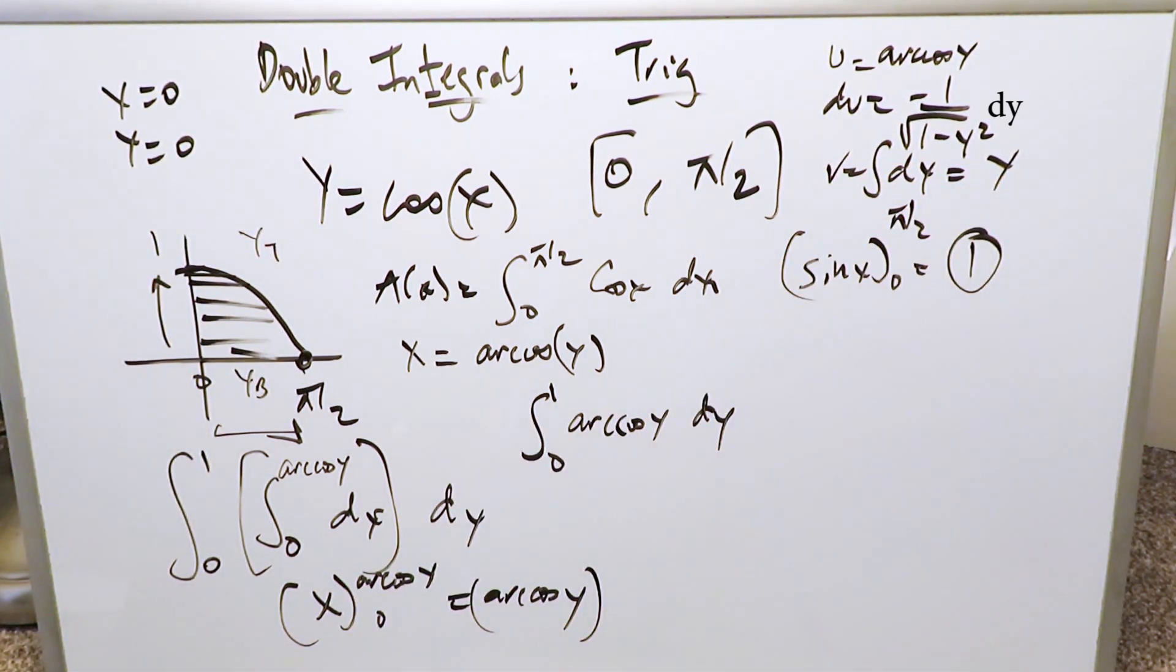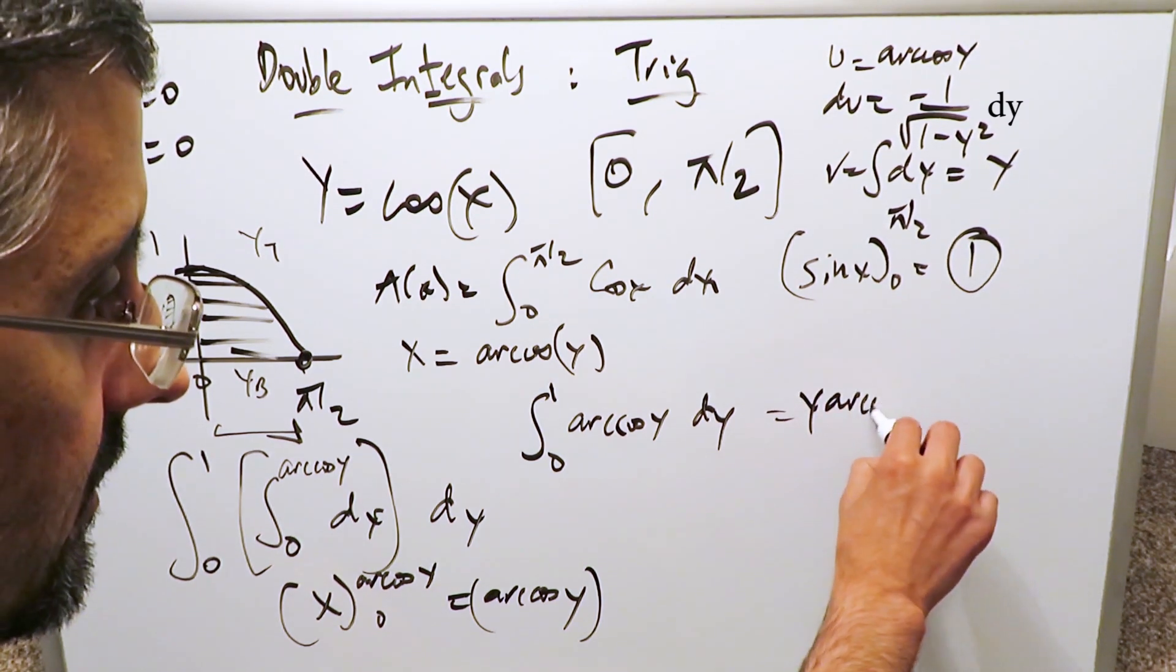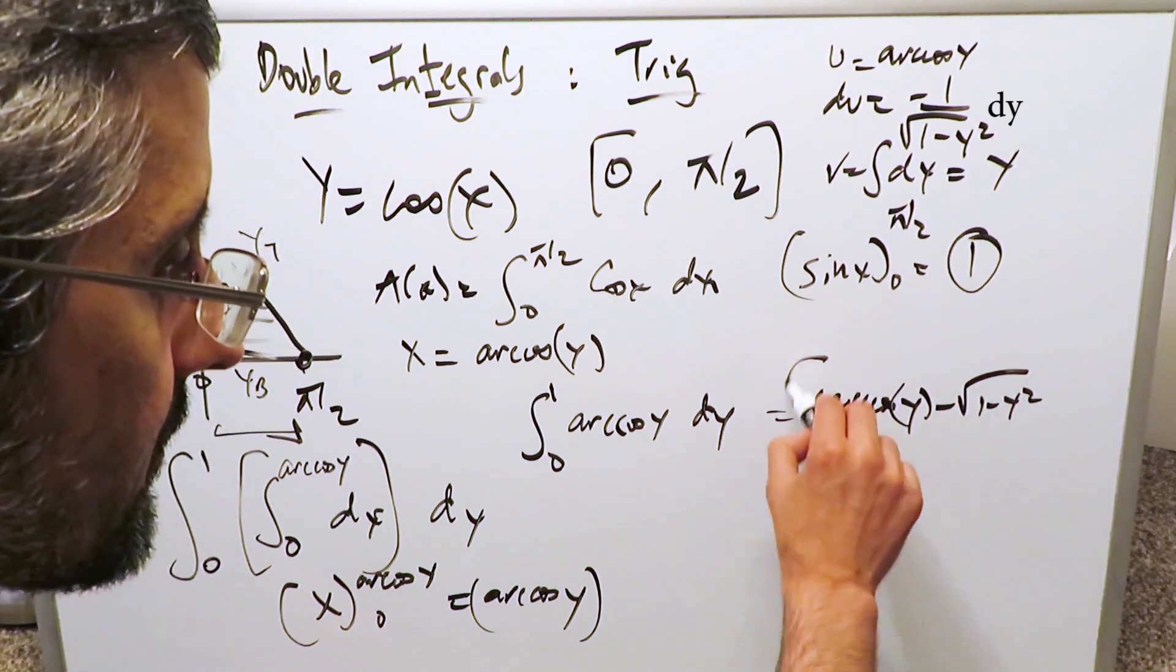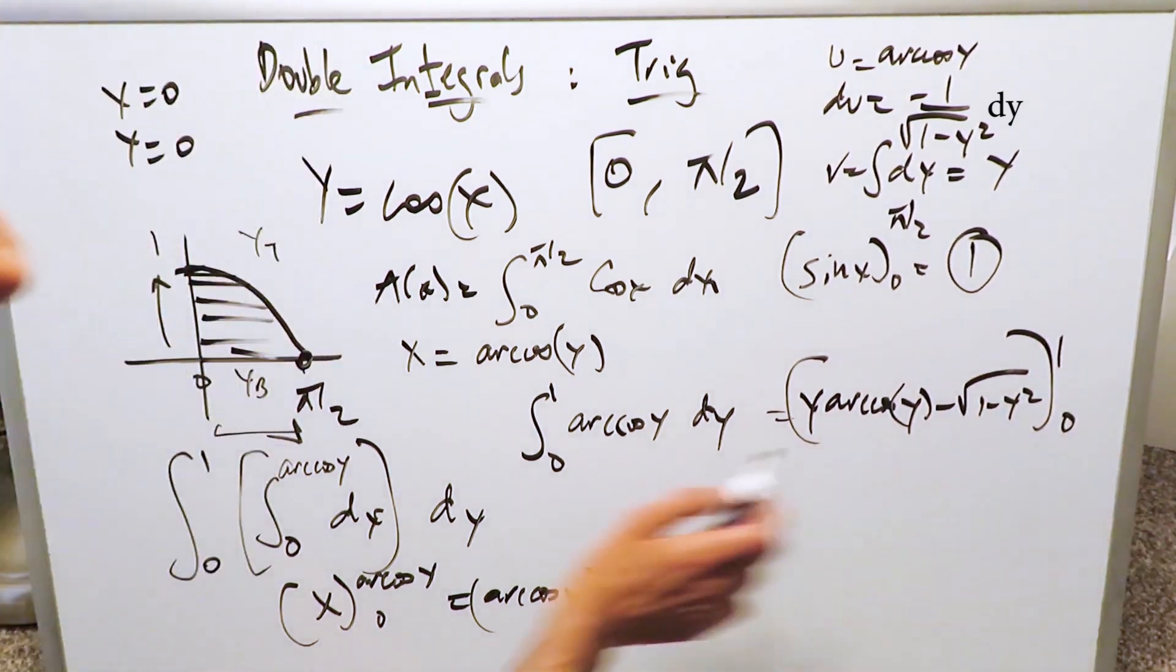Then you know you do u v minus integral v du, or just take out your textbook and refer to the reference sheets and pull out the antiderivative which is nothing wrong. If you do that I have the antiderivative and I'm going to put it for you right here. It will be y arc cosine y minus square root of one minus y square, and we're looking at it from one and zero, upper limit one and zero.